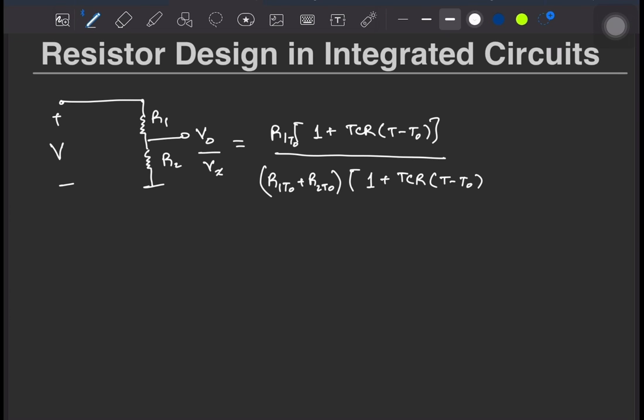Another simple hack to reduce the temperature dependence of a resistor, if you don't want to use the zero TEMCO resistor, is to put a negative TEMCO and a positive TEMCO resistance in series. This might help to lower the temperature sensitivity.